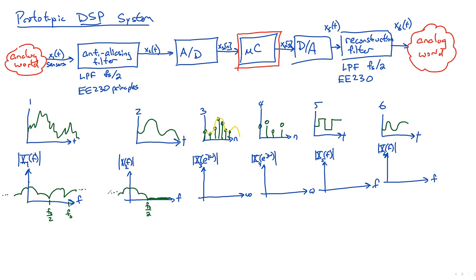After we convert that into the discrete domain, this f_S over 2 turns into our pi. Still looks the same though. Now, you know that it will also replicate over here - it'll replicate over and over. So this is what we put into our microcontroller.